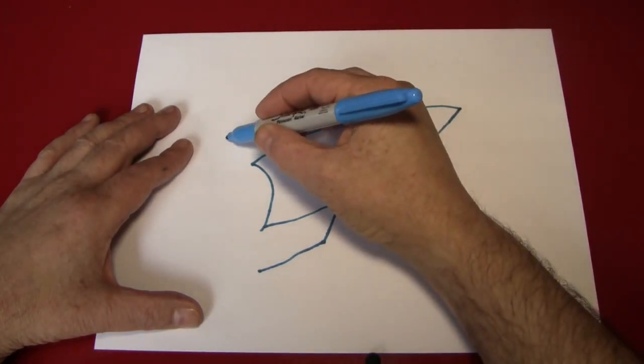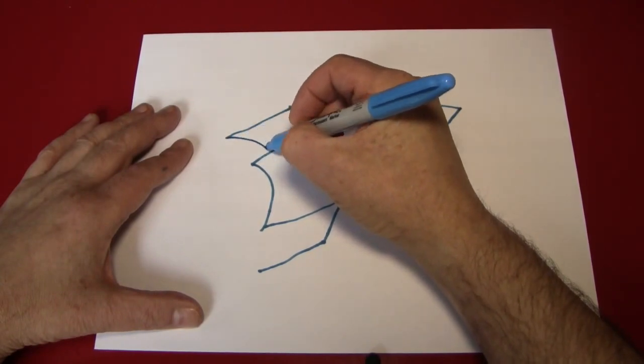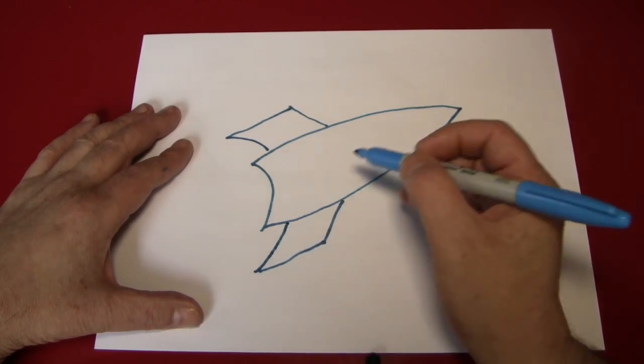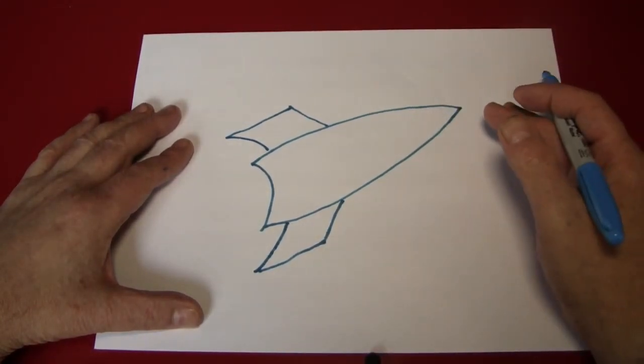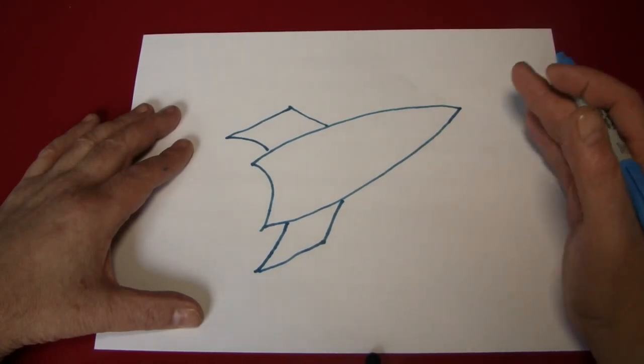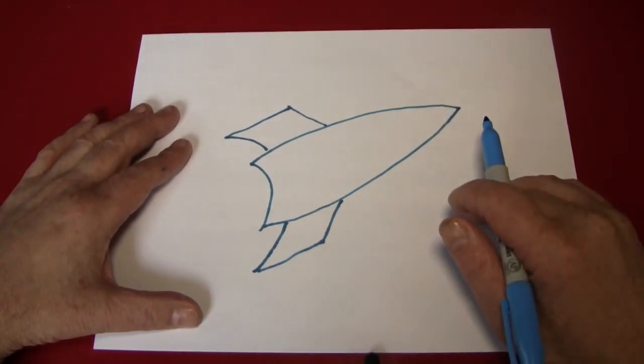And then bring these rudders back in with curved lines. Now I am doing this while I am talking and from behind the camera, so it is not coming out as well as it ordinarily would. But you are getting the general idea, I hope.